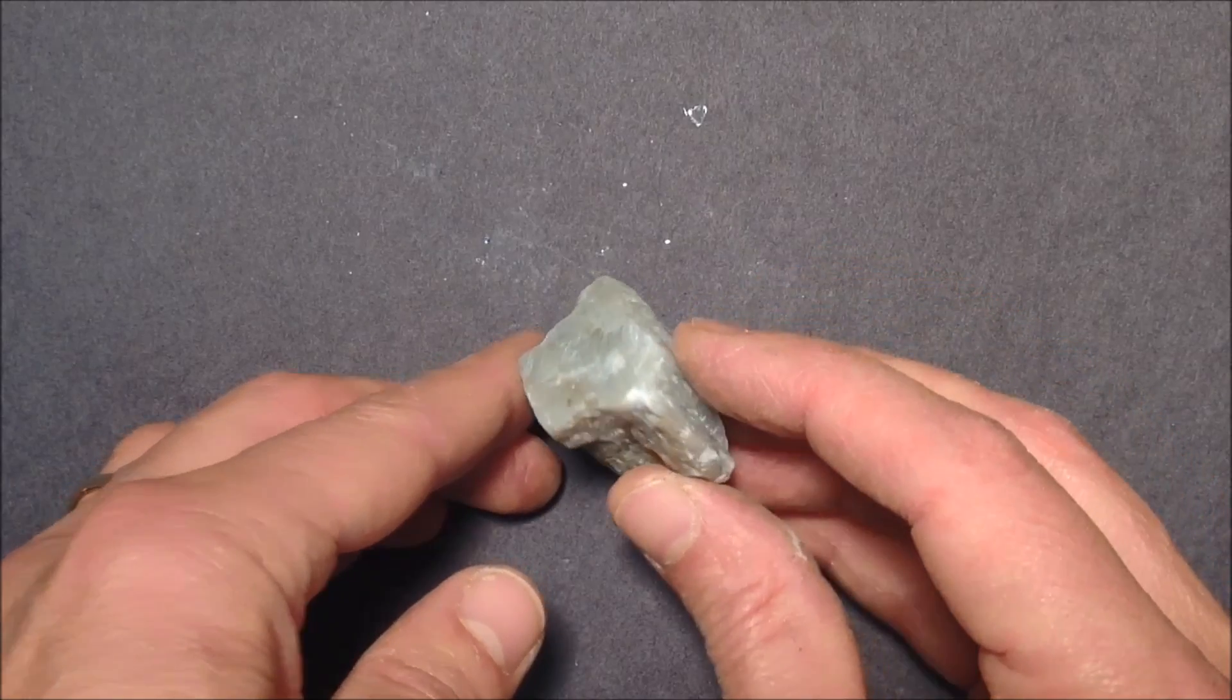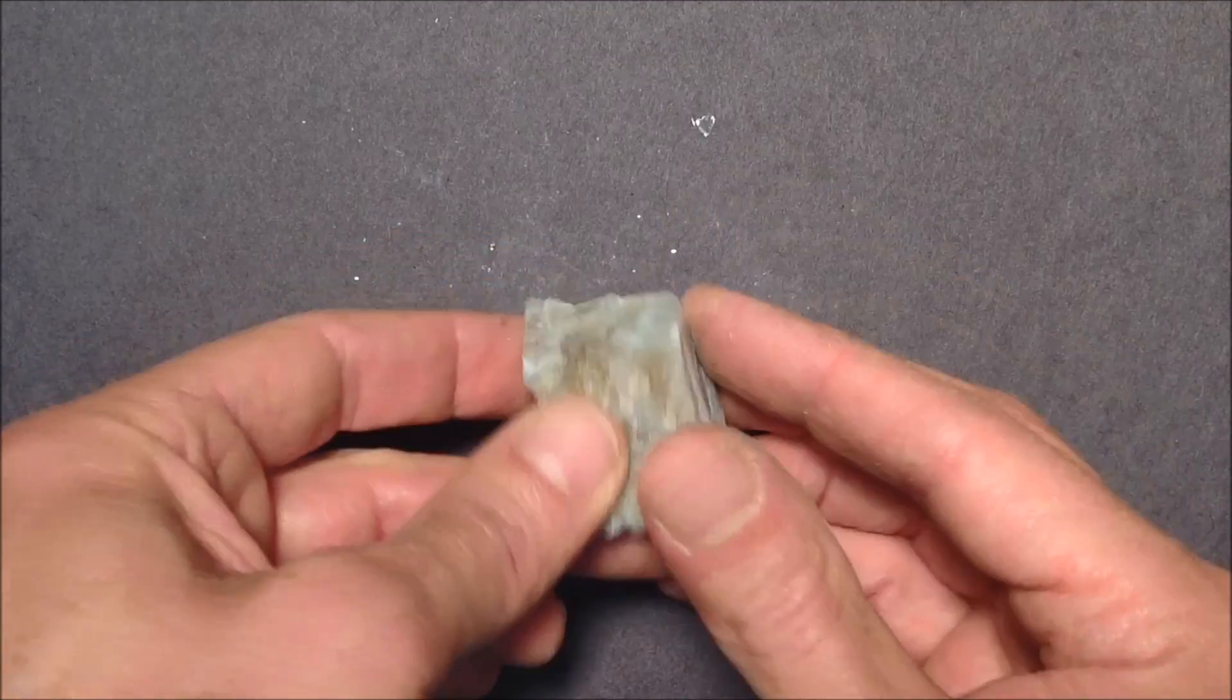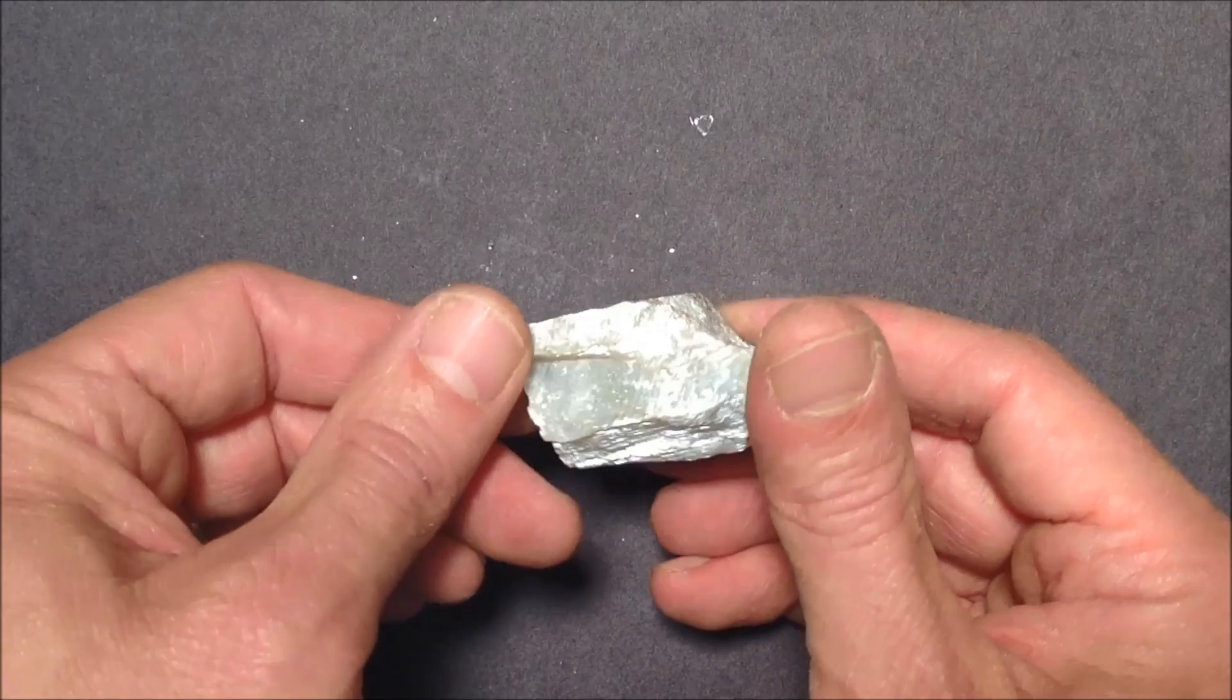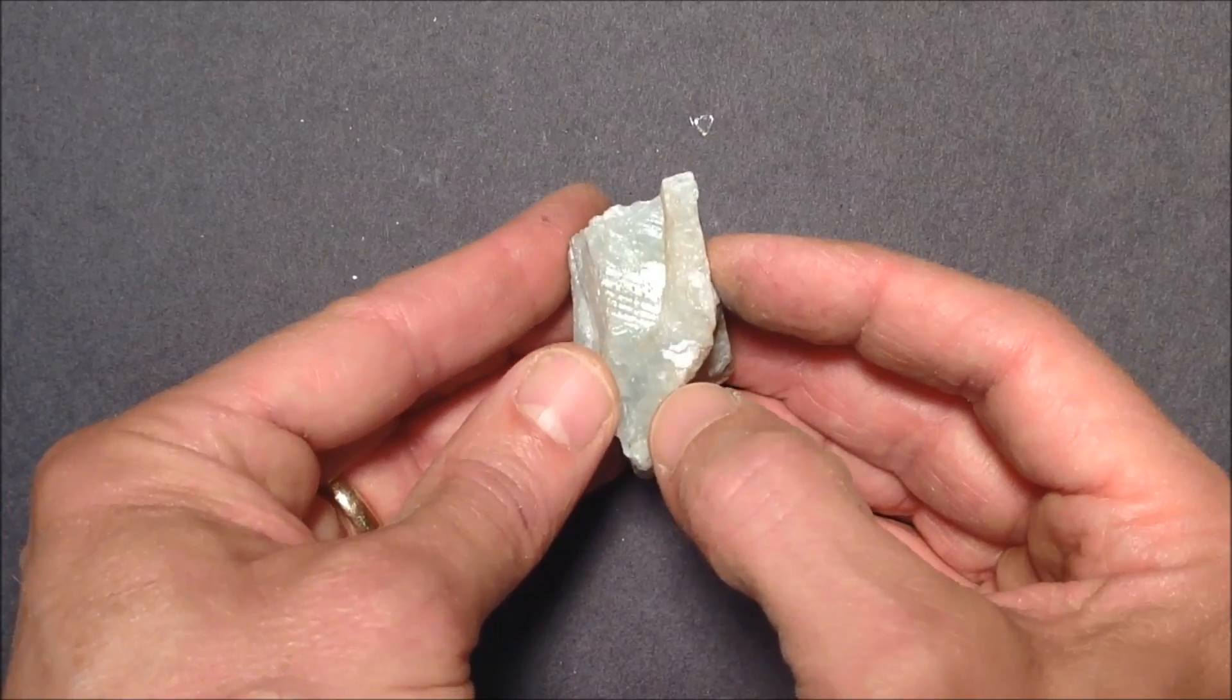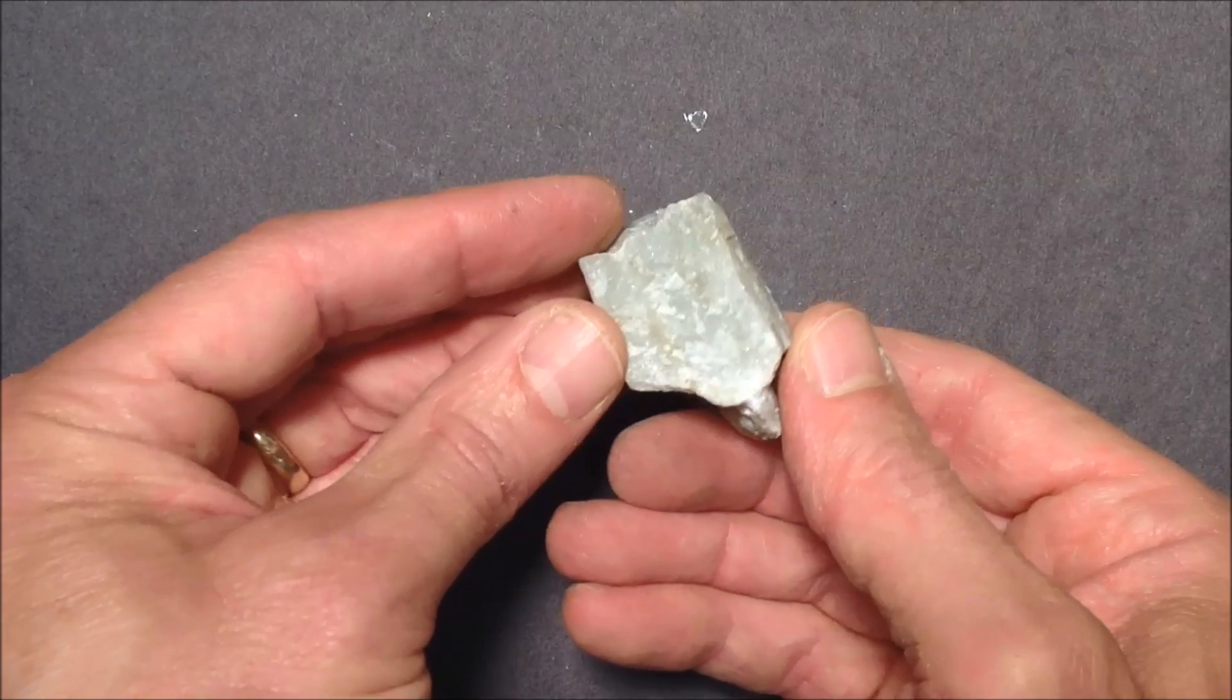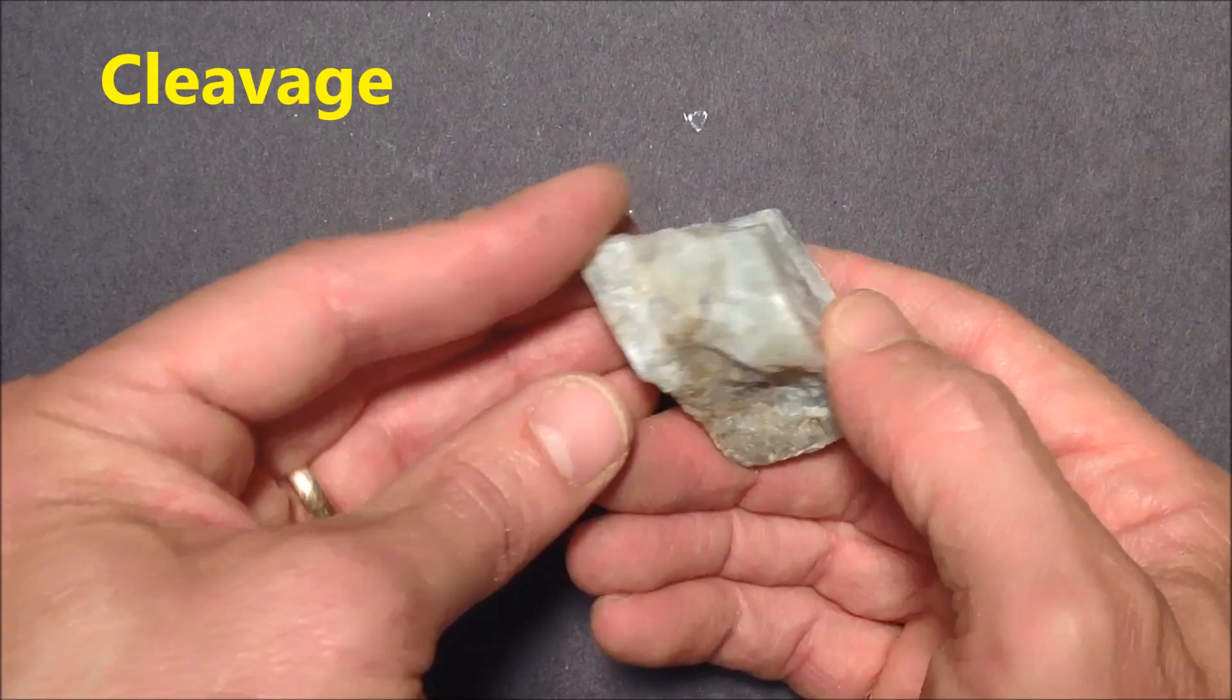This may be a little more challenging, cleavage or fracture. Actually it's a little hard to see. It's hard to see in the light but you can see the way it reflects the light right there. On that side you see it there a bit. You see it kind of right there. My lighting is not the best. That is cleavage though, if you're having trouble with that on the video, that's very understandable.